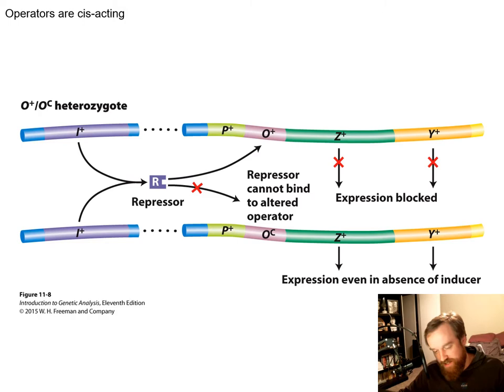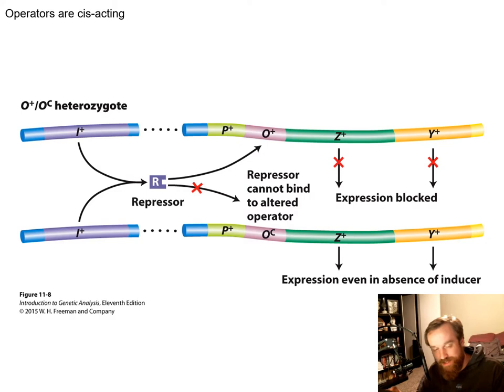An important concept with these molecular happenings within the cell is cis-acting versus trans-acting. Cis-acting means acting on the same; trans means opposite. When we talk about regulatory elements — repressors, activators, operators, promoters — we apply these concepts within the framework of repression and controlling transcription.